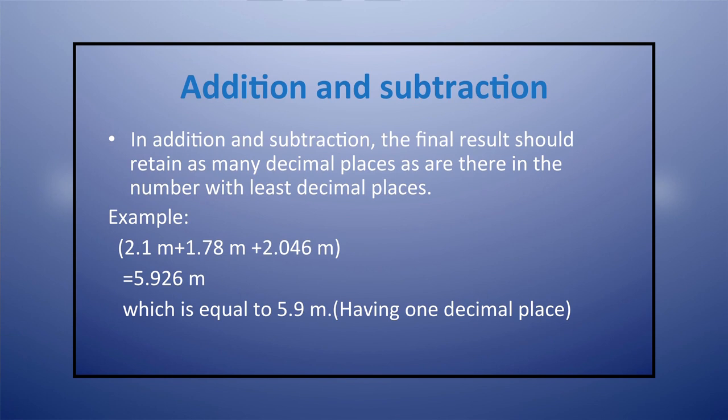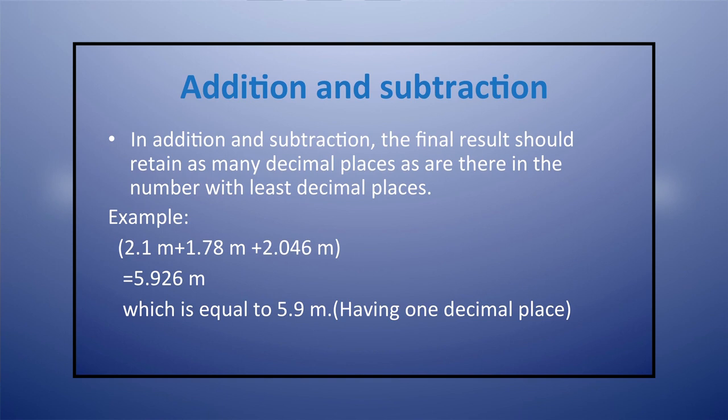Now let us discuss how to calculate significant figures in mathematical operations such as addition, subtraction, multiplication and division. In case of addition and subtraction, the final result should retain as many decimal places as are there in the number with the least decimal places. For example, adding 2.1 m + 1.78 m + 2.046 m: the least decimal place is 1 (from 2.1 m). The result of the addition is 5.926 m, but keeping only one decimal place, the result is 5.9 meter.